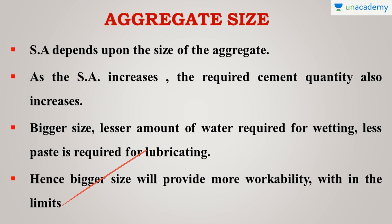Bigger size requires less water for wetting and less paste for lubricating the entire aggregates. Hence, more extra paste is available for lubricating and workability purposes. Bigger size will provide more workability within limits — these points are valid for common concrete. For more advanced concrete types like high-performance or high-strength concrete, admixtures are added. There, even if the water-cement ratio and aggregate size are less, workability can still be high due to the action of admixtures.